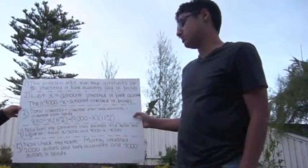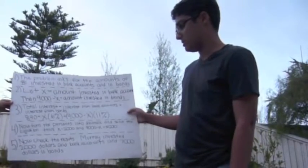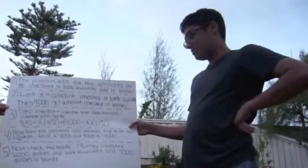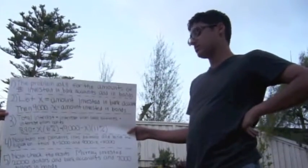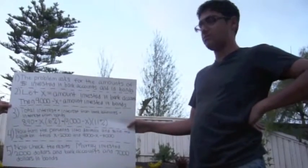Turn the percents into decimals and solve the equation. Thus X equals 2,000 and 9,000 minus X equals 7,000. Murray invested $2,000 in the bank and $7,000 in bonds.